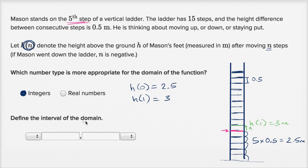And then they say define the interval of the domain, and we have these little toggles here to think about to define the interval of the domain. And let's see, the lowest value for n, he can go as far as one, two, three, four, five steps down. And in that case, n would be equal to negative five.